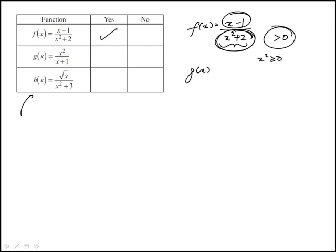If we look at the second one, x squared over x plus 1, here the denominator can be 0 if x is minus 1. So x equal to minus 1 has to be excluded from the domain. The function is not defined, so here the domain doesn't consist of all real numbers. So the answer here would be no.